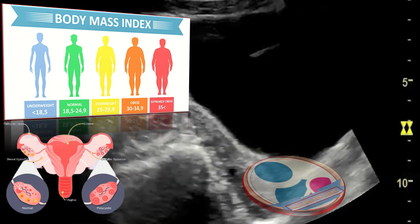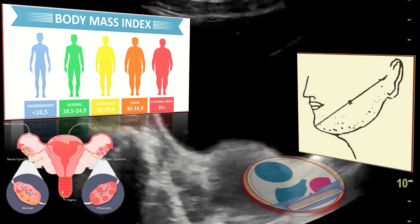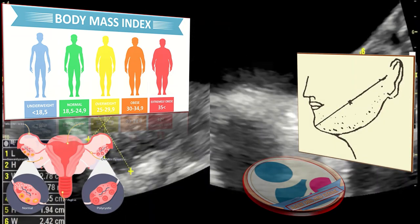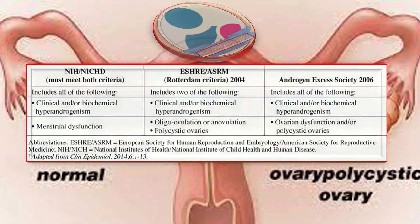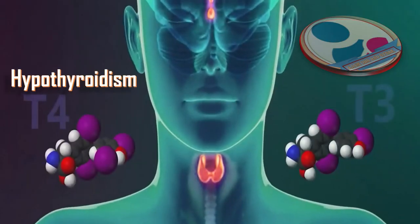Some people with PCOS are overweight while others are thin. Some have symptoms like unwanted hair growth or hair loss, while others do not. Different organizations also have different criteria for making the diagnosis of PCOS, and you can find all of these in the information button in the top right corner of this video.